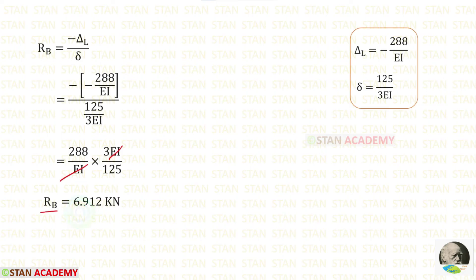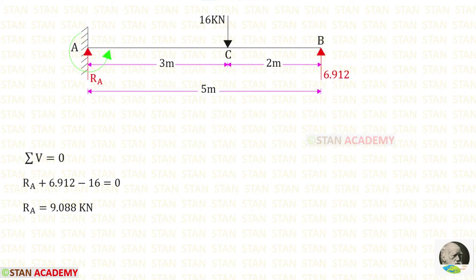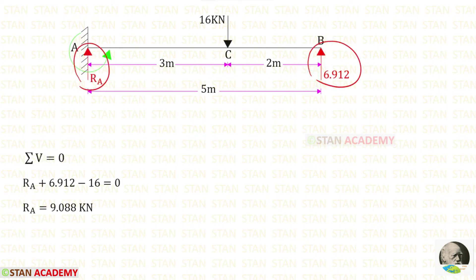Now let us apply both δL and δ into the formula for RB. Minus into minus will be positive. Then using sigma V = 0 to find RA: RA and RB are acting upwards so they are positive, and the 16 kN load is acting downwards so it is negative. Finally, for RA we are getting 9.088 kN.